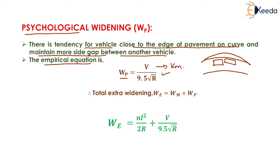The total extra widening equals WM plus WP. Putting the values, WE = NL² / 2R + V / (9.5√R). That is the total extra widening formula.